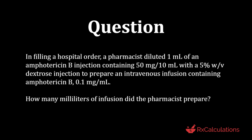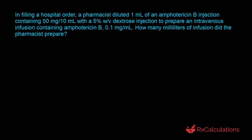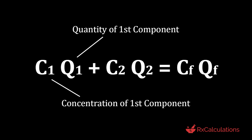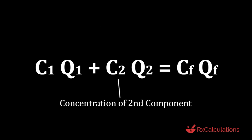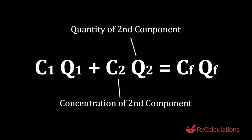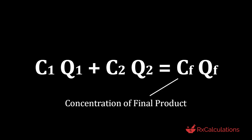The second question says: in filling a hospital order, a pharmacist diluted 1 milliliter of an amphotericin B injection containing 50 milligrams per 10 milliliters with a 5% weight-by-volume dextrose injection to prepare an intravenous infusion containing amphotericin B at 0.1 milligrams per milliliter. How many milliliters of infusion did the pharmacist prepare? The best strategy here is to use the algebraic method.